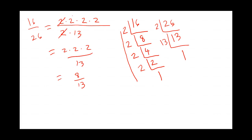So I can rewrite 2 times 2 times 2 over 13, which equals 8 divided by 13. That is our reduced fraction. That's how to do it by hand — now let's go over to Excel and see how to do it there.